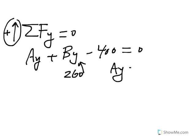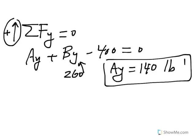This gives me an Ay of 140 pound, which again comes out to be positive, which means it's acting in the positive direction, or the assumption is right.